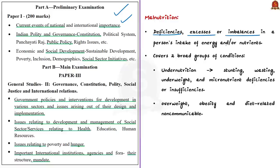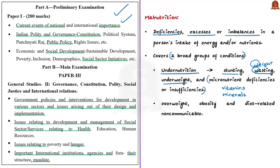The term malnutrition covers two broad groups of conditions. One is undernutrition, which includes stunting, wasting, underweight and micronutrient deficiencies — meaning lack of important vitamins and minerals in the body. Stunting refers to low height for age; wasting refers to low weight for height; underweight refers to low weight for age. The other group is overweight, obesity and diet-related non-communicable diseases, which include stroke, diabetes, heart diseases, and cancer.